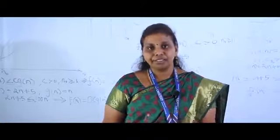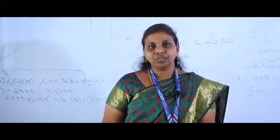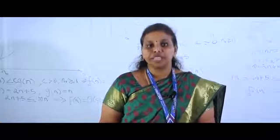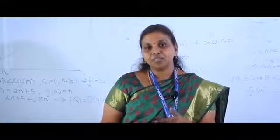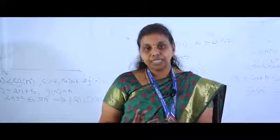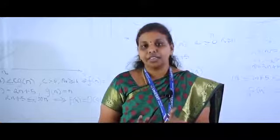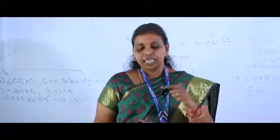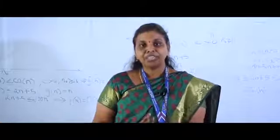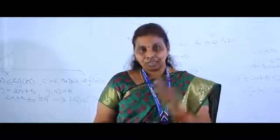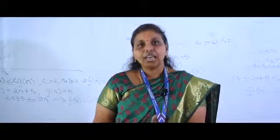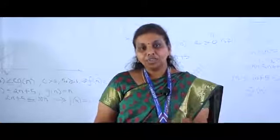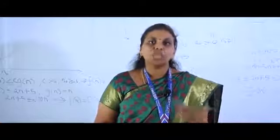Let us see worst case, best case, and average case analysis using linear search. Best case: the element is present at the very first position of the array — the algorithm finds it immediately. Worst case: the element is present at the last position or not present at all — this is the maximum time taken. Average case: the element is present somewhere in the middle of the array. All asymptotic notations can be used for all three cases, but for Big Theta, the algorithm must take constant-order time in both its lower and upper bounds.